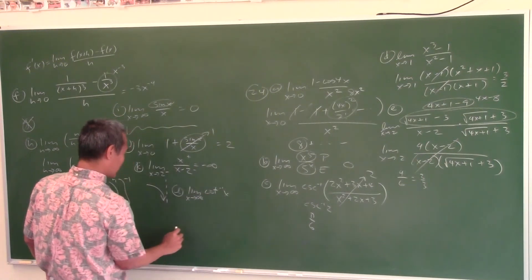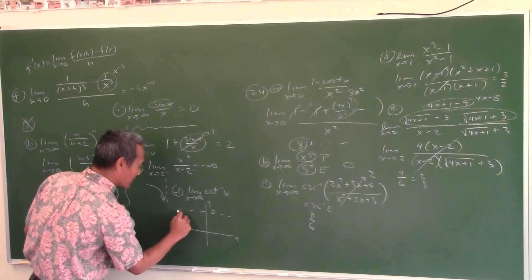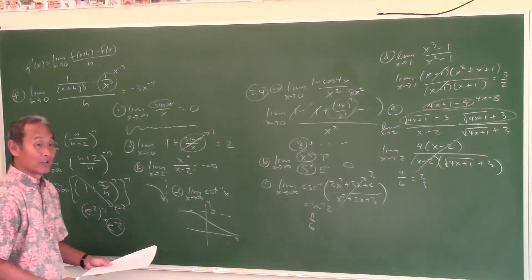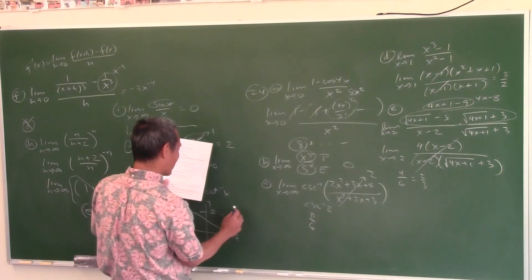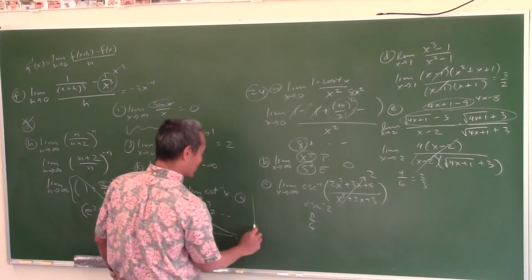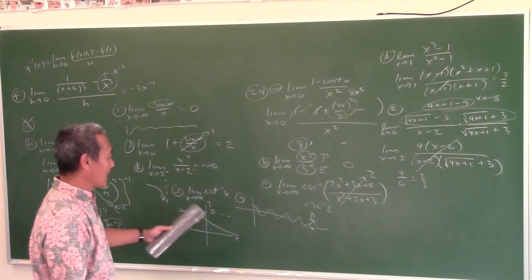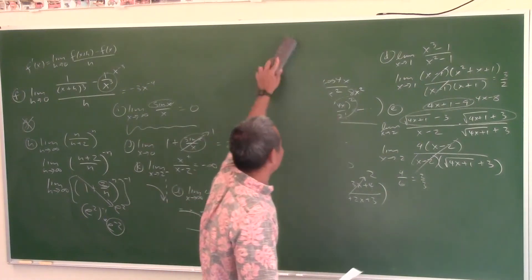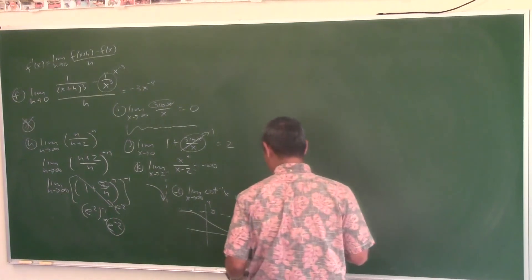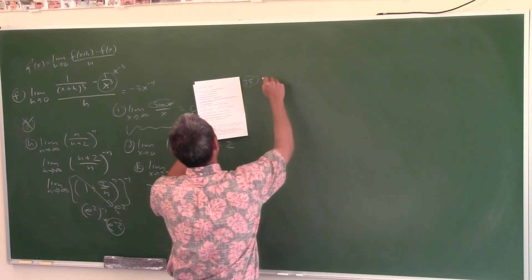For base graph limits: the limit as x approaches infinity of arccot(x) is 0 — you need to know the graph of arccotangent. The limit as x approaches infinity of cosine(x) does not exist, since cosine just keeps oscillating up and down and never approaches a single value.